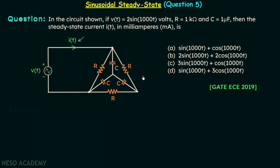Now let us move on to the solution. I want you to focus on these 5 branches. This is branch 1, this is branch 2, this is branch 3, this is branch 4, and this one here is branch 5. These 5 branches together are forming a bridge.